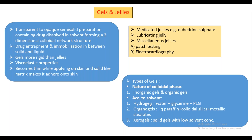If the solvent is water, it is called a hydrogel. According to solvent, classification of gels: hydrogels consist of water plus glycerin plus polyethylene glycol. Organogels consist of liquid paraffin plus colloidal silica and metallic stearate. According to solvent: hydrogels means water; organogels means organic solvent — which is liquid paraffin — with low solvent concentration. Remember it that way. Hydrogels means water; organogels means liquid paraffin. That's all that's important for us.